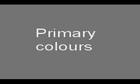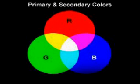The colors red, green and blue are called primary colors. This is because they cannot be made by mixing other projected colors.